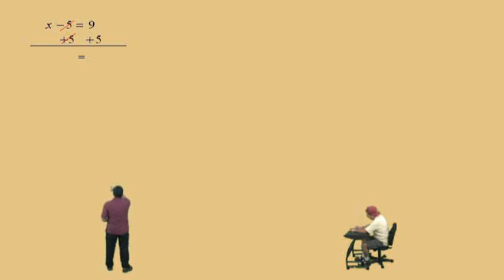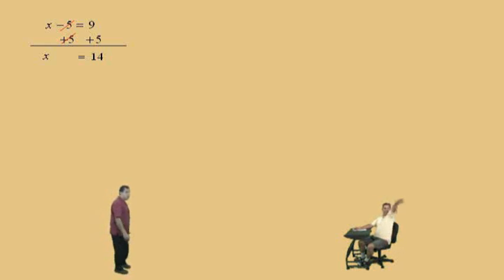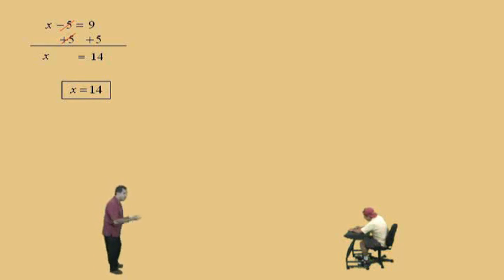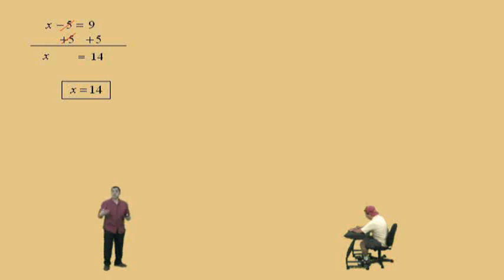Zero. That's right. And x plus 0 leaves us with x on the left-hand side. What's 9 plus 5? 14. That's right, and so our answer is x equals 14. With all your equations, you can go back and verify that your solution is correct by substituting x equals 14 into the original equation. If we do that, 14 subtract 5 is 9. Therefore, our solution x equals 14 is correct.